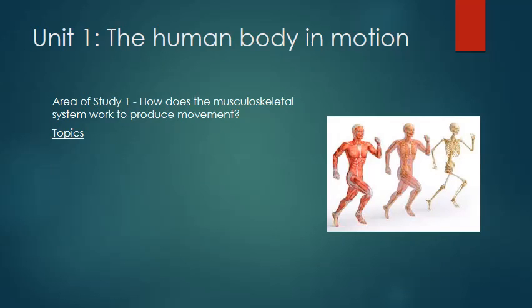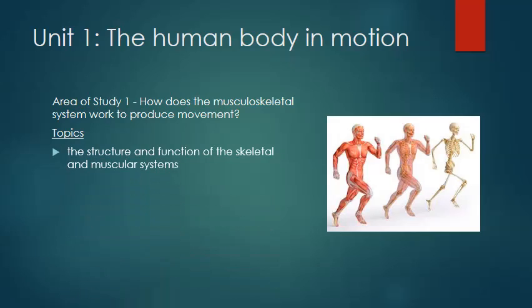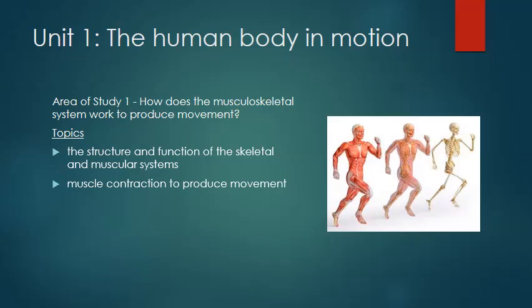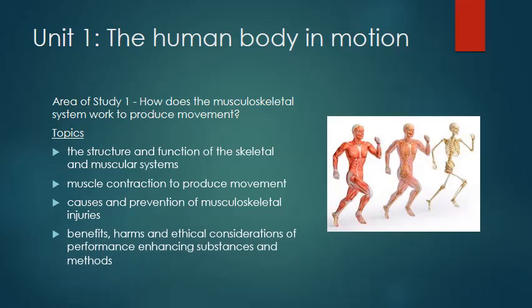Unit one, area of study one, investigates how the musculoskeletal system works to produce movement. The key topics include the structure and function of the skeletal and muscular systems, how muscles contract, causes and prevention of musculoskeletal injuries, and how performance enhancing substances can be used to improve the function of the musculoskeletal system.